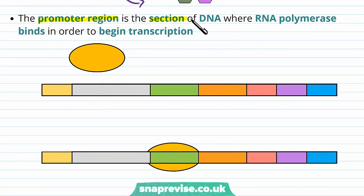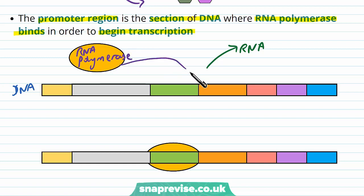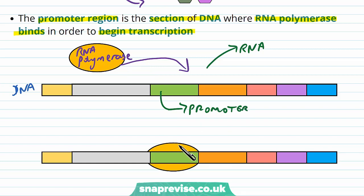The promoter region is a section of DNA where the RNA polymerase binds in order to begin transcription. This whole molecule is DNA and in transcription we turn DNA into RNA, because RNA is what's read by the ribosomes. To make RNA from DNA we use the enzyme RNA polymerase. So normally when transcription is about to begin, the RNA polymerase binds to the promoter region, moves along making RNA from the DNA, and the RNA can then be translated into a protein.